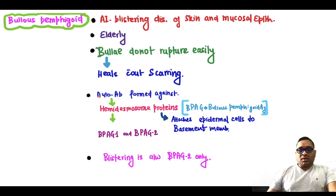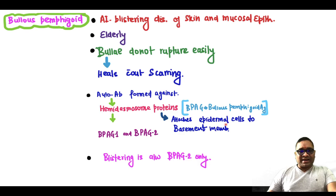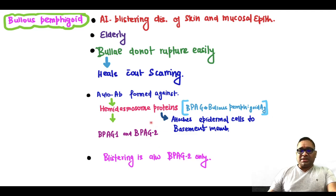In this condition, autoantibodies are formed against hemidesmoproteins, consisting of two proteins: BPAG1 and BPAG2. These are bullous pemphigoid antigens which attach epidermal cells to the basement membrane. Because of these autoantibodies, this attachment is destroyed, and blistering occurs only due to BPAG2 destruction. Please remember, blistering is associated with BPAG2 only.